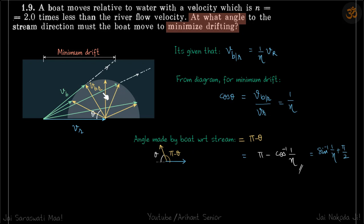It's given that velocity of boat with respect to river is less than velocity of river, so it cannot go on a straight line path. There has to be some drift. We need to find what is that minimum drift, so it can take these different directions.